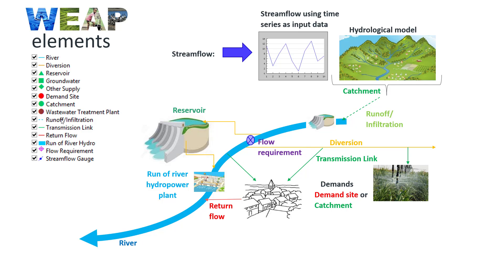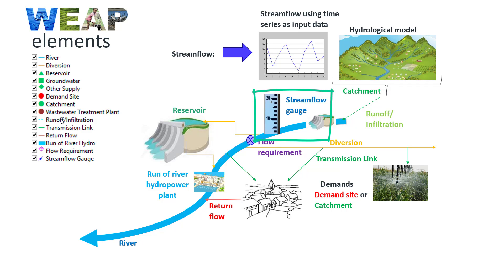To evaluate the model performance — whether the simulated flows correspond to observed flows — we need to include a stream flow gauge. This element allows you to compare simulated and observed stream flow. This information is required to estimate goodness of fit metrics. When you include a stream flow gauge element, a stream flow time series is needed.